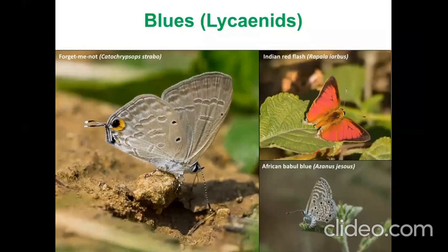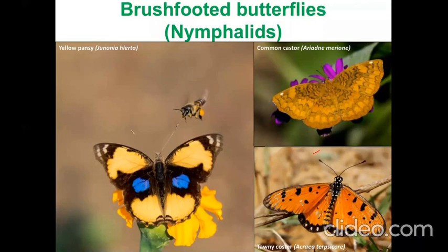A lot of blues are found here — first in March and May, and then in the winters. Most of the blues we see are the Aravalli group. Moving to the brush-footed family, which is another big family found here — in terms of pansies, we have recorded gray pansy as well. The chocolate pansy is rare, but apart from that, all pansies are seen here. Common caster is a very common butterfly, as well as tonic caster, which is usually seen in less disturbed areas. Wherever you see cows grazing, you will find tonic casters.